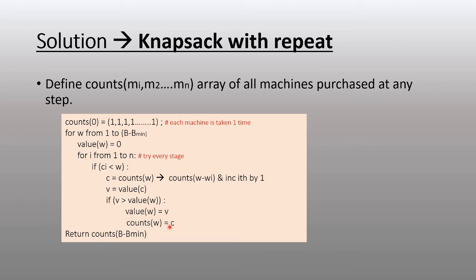We keep the counts for that weight as the optimal count. We repeat this loop for every possible machine and compute the most optimal count. We increase the budget and keep going. When you've gone through all of these, the last budget cycle would be B minus Bmin, and you return counts[B minus Bmin].